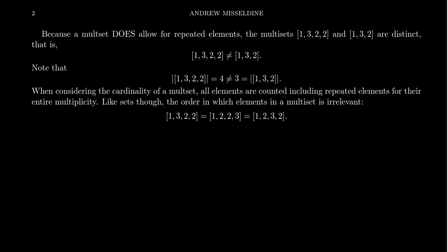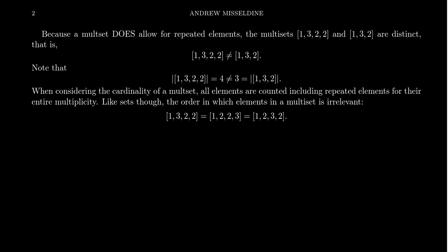This leads to the idea of cardinality. With a multi-set, we count all of the elements with their multiplicities. The cardinality of [1, 3, 2, 2] would be 4 — the element 2 is counted twice. You can think of the cardinality as the sum of all the multiplicities. The multi-set [1, 3, 2] has a cardinality of 3, since each element shows up with multiplicity 1 — so 1+1+1=3, as opposed to 1+1+2=4. Even if two multi-sets have the same cardinality and elements, if the multiplicities differ, they are different multi-sets.